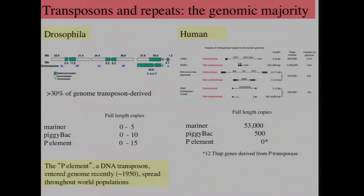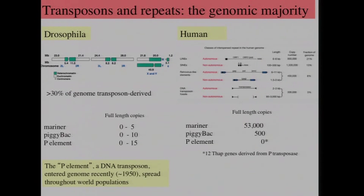If we just look at the Drosophila or human genome — in Drosophila, about 30% of the genome is repeated and related to transposons. Much of it is clustered around the centromeric regions, the heterochromatin shown in green. In humans, even more — an estimated 50% or more of the genome is a product of transposition. In Drosophila, there are over 180 different transposons that have been characterized, and these fall into families. Many of these families are very, very similar.